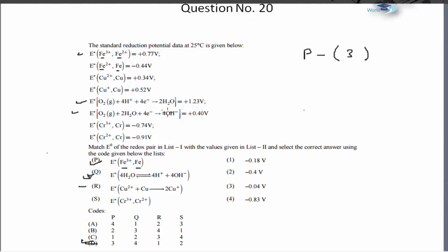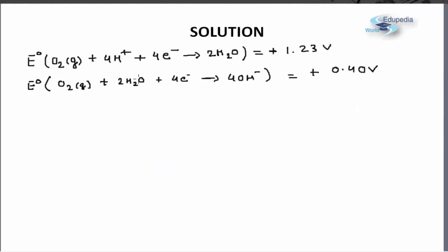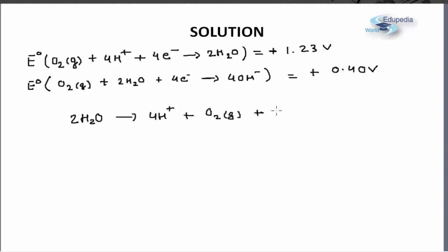These are the two half-cell reactions given. Looking at the target reaction 4H₂O → 4H⁺ + 4OH⁻, since 4H⁺ appears on the product side, I need to reverse the first reaction. The reversed reaction becomes 2H₂O → 4H⁺ + O₂ + 4e⁻, and upon reversing, its potential also gets a negative sign, becoming −1.23 volts.